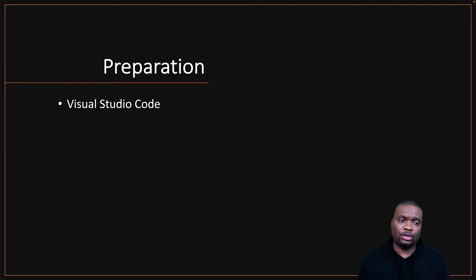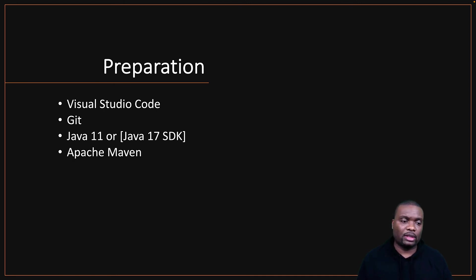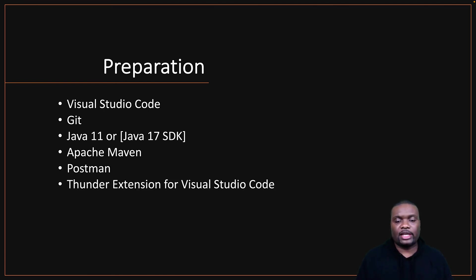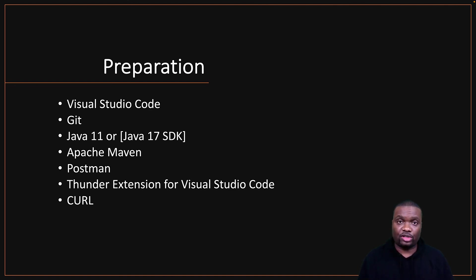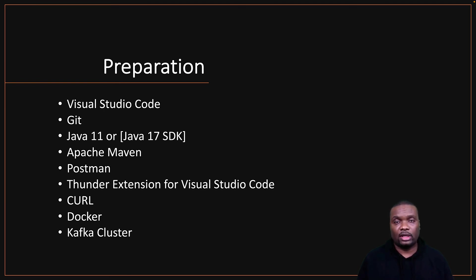You're going to need Visual Studio Code, Git, and Java — the latest version, though Java 11 should be fine as well. We'll use Apache Maven to compile and run the code. Postman or the Thunder extension for VS Code will be very helpful for interacting with the REST endpoints to see what's happening as services are migrated from orchestration to choreography. You can also use curl, but I prefer Postman or Thunder for the UI. We'll also need Docker for a container environment and a Kafka cluster, either locally or via a cloud provider.